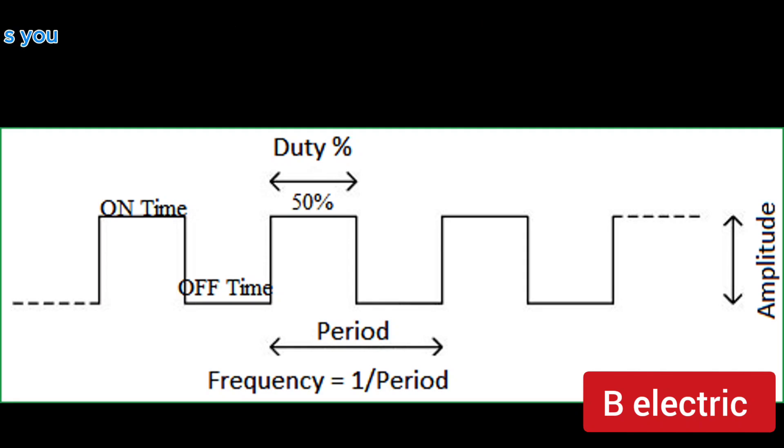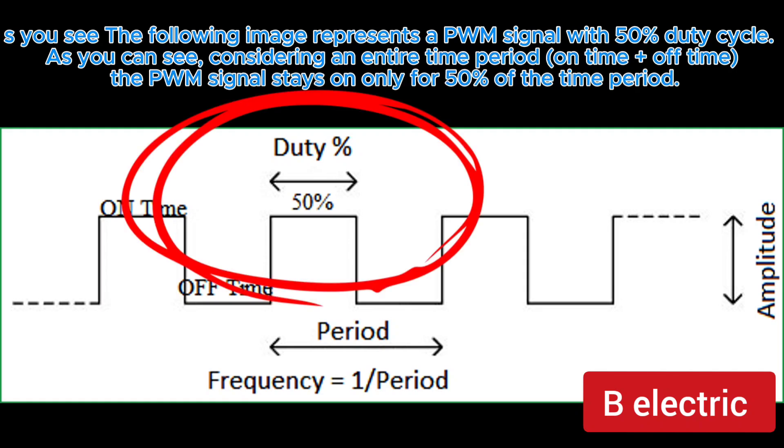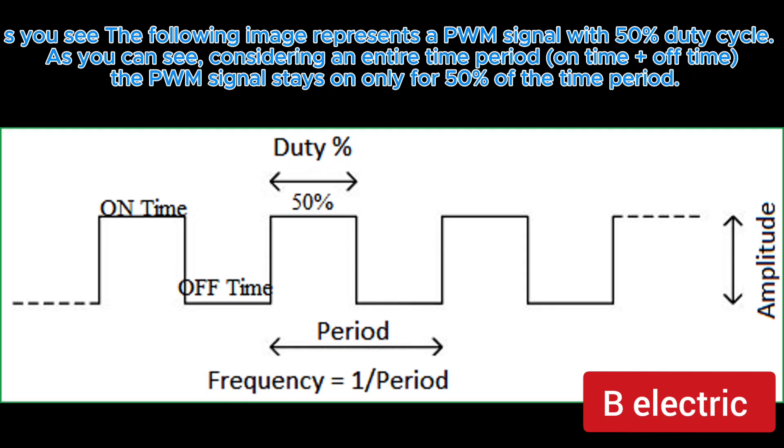As you see, the following image represents a PWM signal with 50% duty cycle. As you can see, considering an entire time period, on time plus off time, the PWM signal stays on only for 50% of the time period.